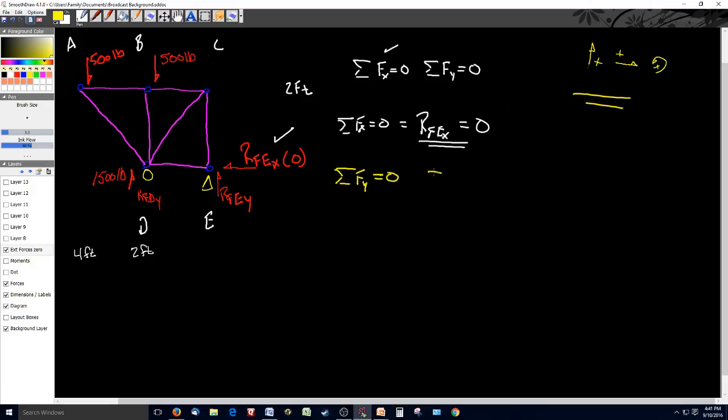So what I'm going to say is the summation of forces y is the force at A plus the force at B plus the force at D or RFDY plus the force at E or RFEY. That all has to equal zero.